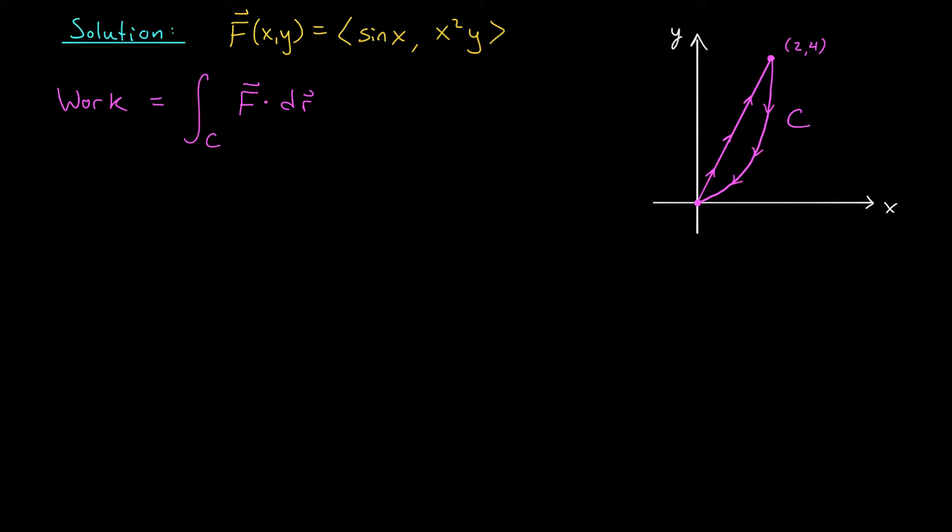First, we could try to show that our vector field is conservative, and then apply the fundamental theorem. That would give us an answer of 0, right? Because we're starting and ending at the same place. But in this example, it's not too hard to see that the vector field is not conservative. You can do this using the component test. If the vector field isn't conservative, then we can't use the fundamental theorem.